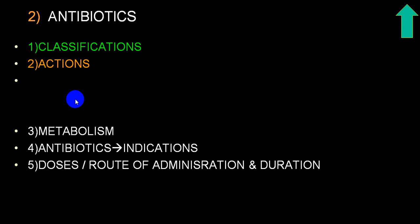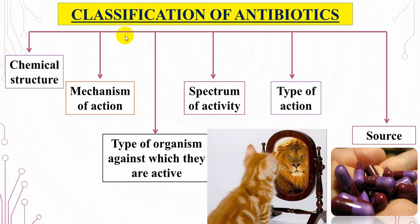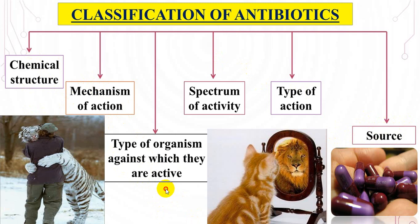Now we come to the main important part — antibiotic classification. Antibiotics can be classified according to chemical structure, mechanism of action, which organism they act on, spectrum of activity (narrow or broad spectrum), type of action (bactericidal or bacteriostatic), and whether they are derived from natural or synthetic sources. Depending on these criteria, structural names and categories are derived.